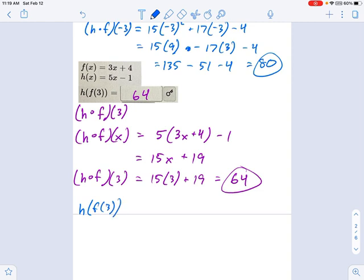So f of 3 is what? Well, that's going to be 3. And in place of x, I put 3 plus 4. So that's 3 times 3 is 9, plus 4 is 13.